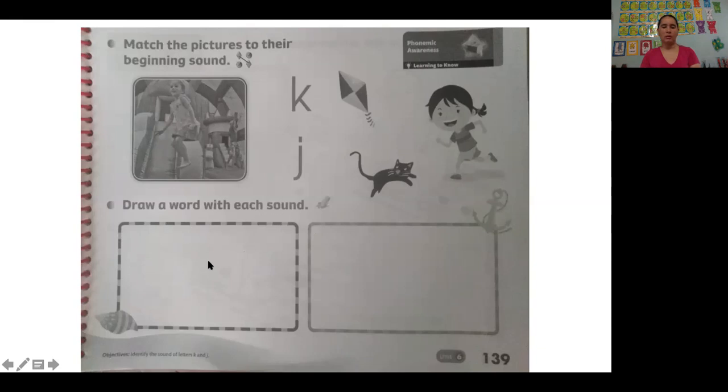Draw a word with each sound. Okay, here ustedes me van a dibujar un dibujo con la letra K y un dibujo con la letra J. You're going to draw an image with the letter K and with the letter J here, okay.